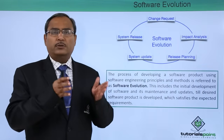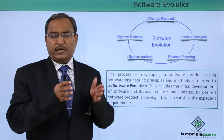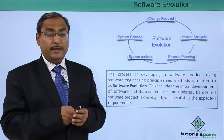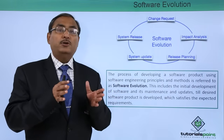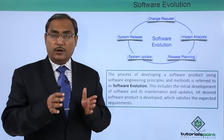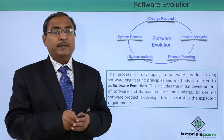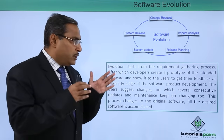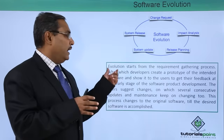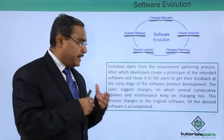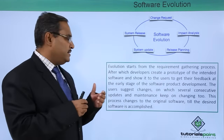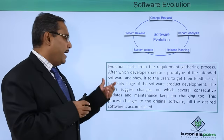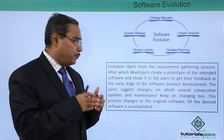At the beginning, we shall ask the respective stakeholders regarding their expectations and requirements from the software. This software development will not get terminated until all those requirements and expectations are implemented. Evolution starts from the requirement gathering process, after which developers create a prototype of the intended software and show it to the user to get their feedback at the early stage of software product development.